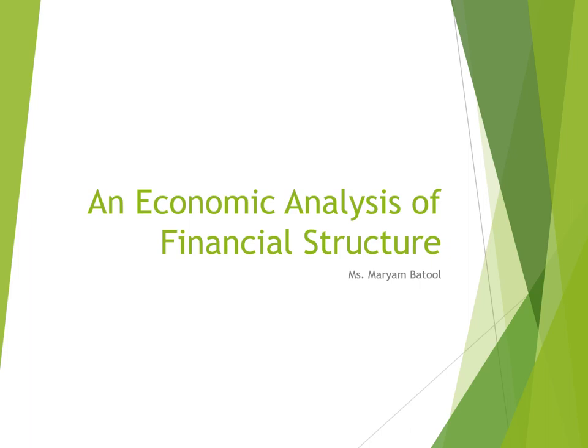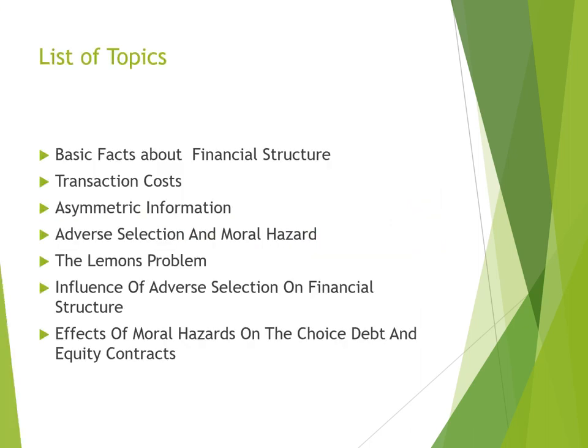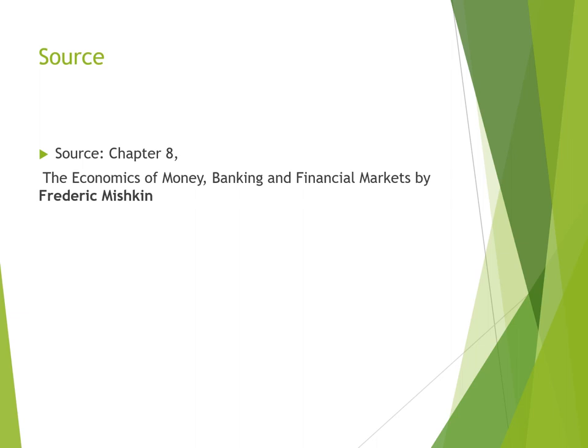In today's lecture and the coming two lectures, we are going to cover an economic analysis of financial structure. The topics include: basic facts about financial structure, transaction costs, asymmetric information, adverse selection, moral hazard, the lemon problem, and the effects of moral hazard on debt and equity contracts. You can study these in detail from Chapter 8 of 'Economics of Money, Banking and Financial Markets' by Frederick Mishkin.